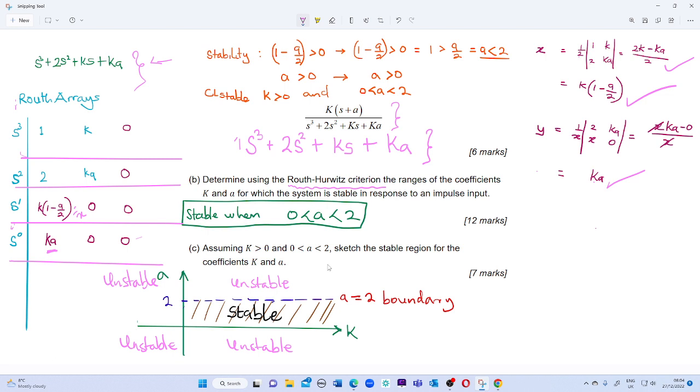Now that we've found all our columns in the Routh array, in order for us to find the stability, all the sign changes in the column must be positive or must never change.